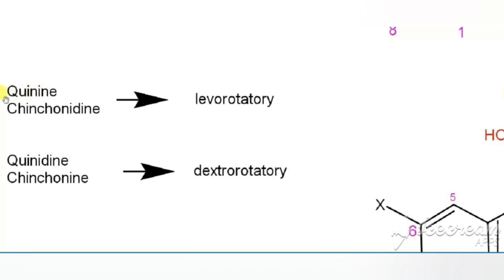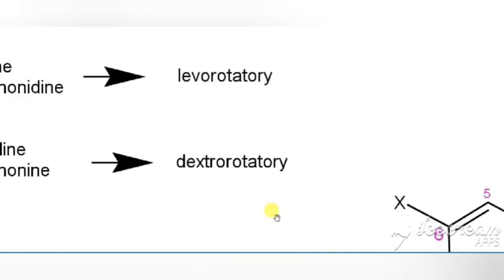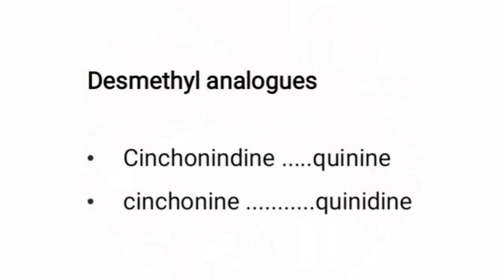Quinine and cinchonidine are levorotatory (levo isomers), whereas quinidine and cinchonine are dextrorotatory (dextro isomers). Cinchonidine is the desmethyl analog of quinine and cinchonine is the desmethyl analog of quinidine.